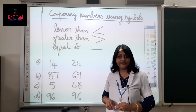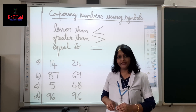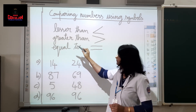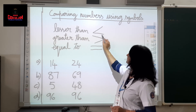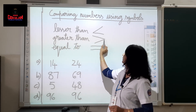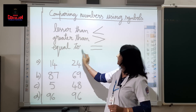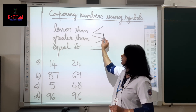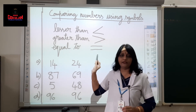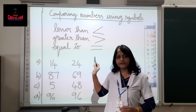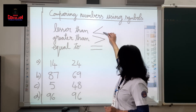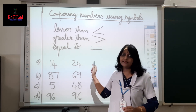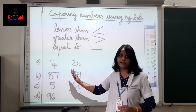Now we will discuss about comparing numbers using symbols. These are the three symbols which are familiar: less than, greater than, and equal to. Always keep in mind — the open end faces the greater number when you compare numbers.